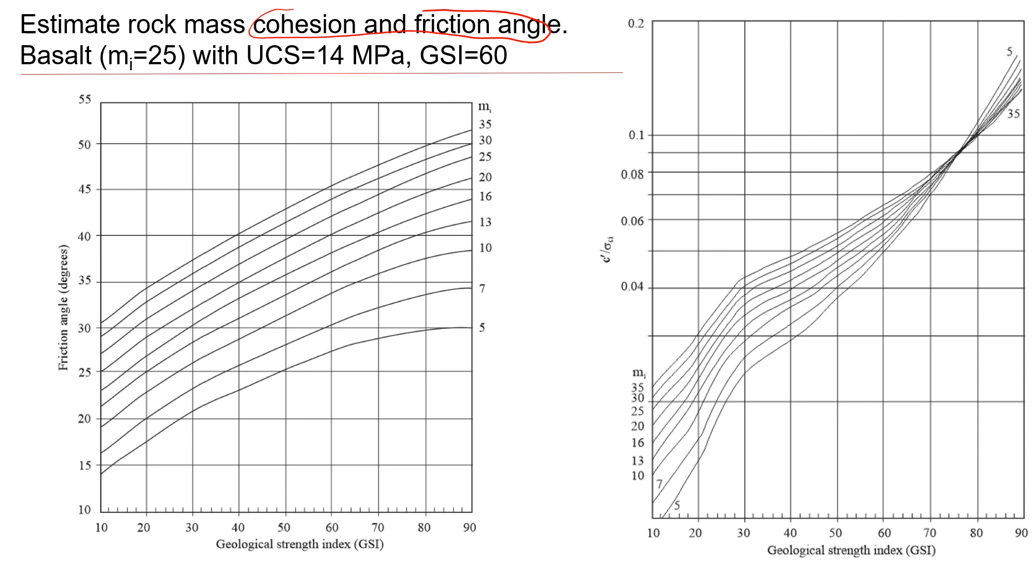To do that, you can use software like RockData or you can just use these charts that will give you some estimation of cohesion and friction angle. Let's start with the friction angle and then we're going to the cohesion. For example, let's look at the rock mass that's made of basalt. We need to know what rock it is so that we can get mi.